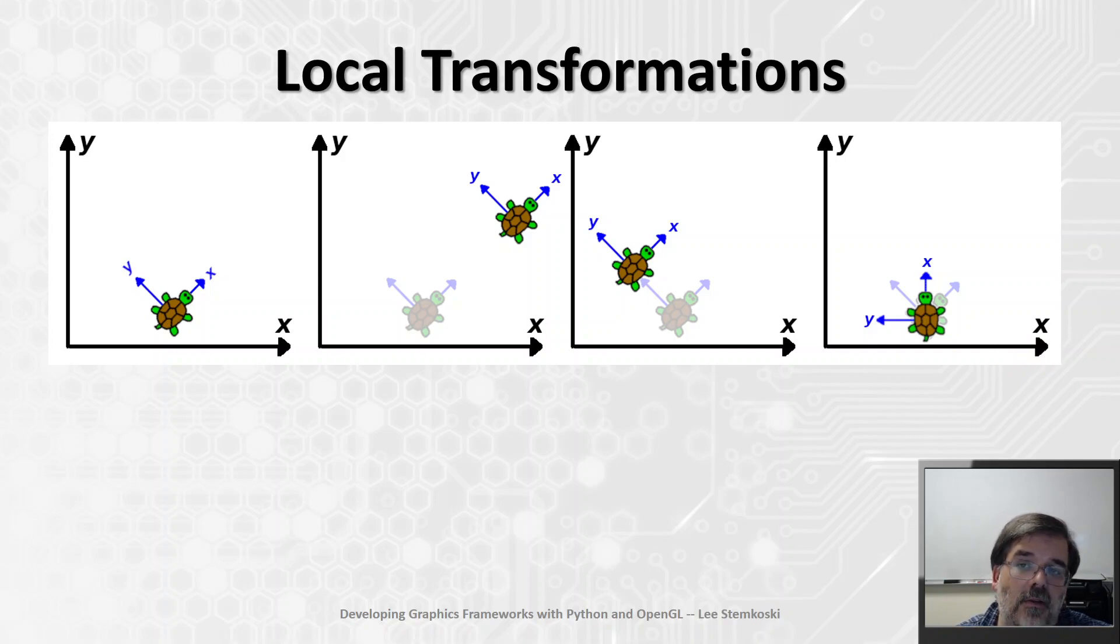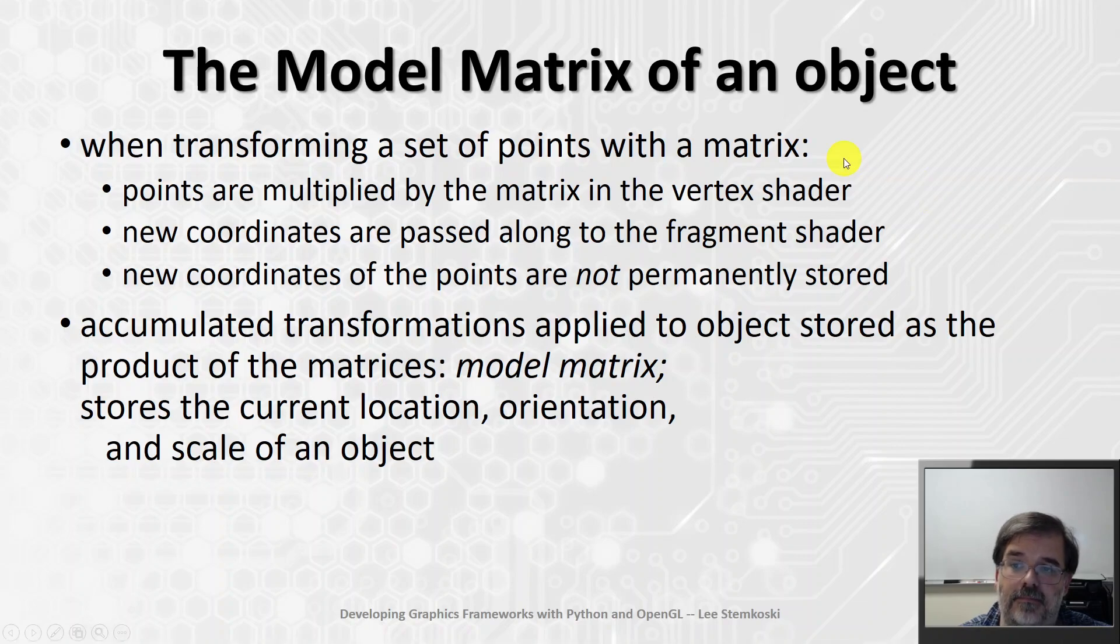And it's something called the model matrix of an object. Now when we transform a set of points with a matrix, when we're doing this in OpenGL, each one of those points, and they're stored in a vertex buffer, those points are sent along to a vertex shader, and the multiplication takes place in the vertex shader. That generates a new set of coordinates, and those new coordinates are passed along to the fragment shader to determine where the object is going to show up in the picture.